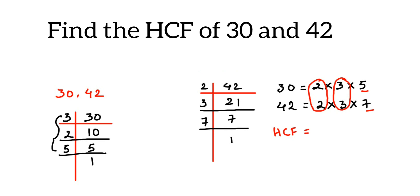From this I'll take one 2 and from this I'll take one 3. So 2 times 3 is 6. The HCF of 30 and 42 is 6.